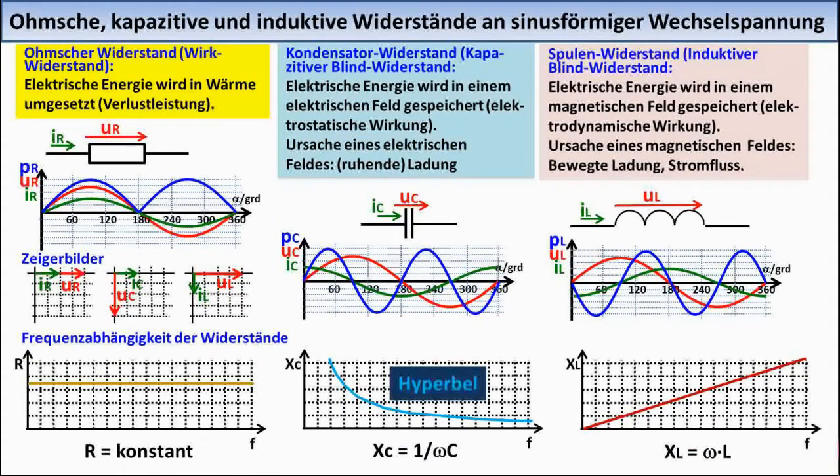In electronic tutorial number 12 about capacitors, it is shown that with a capacitor, the AC voltage lags the AC current by 90 degrees. In electronic tutorial number 13 about coils, it is shown that with a coil, the AC voltage leads the AC current by 90 degrees. With an ohmic resistor, however, voltage and current always have the same phase position.